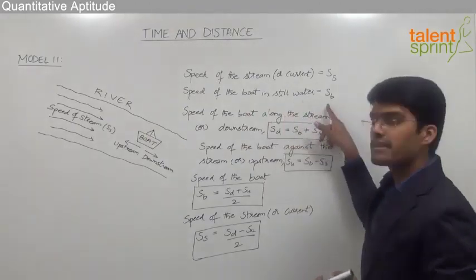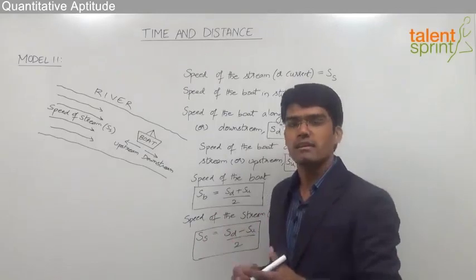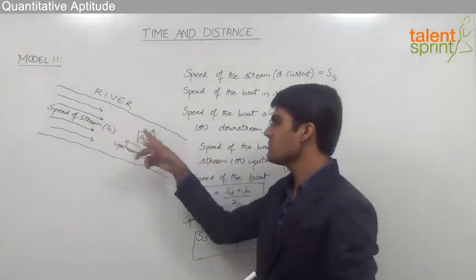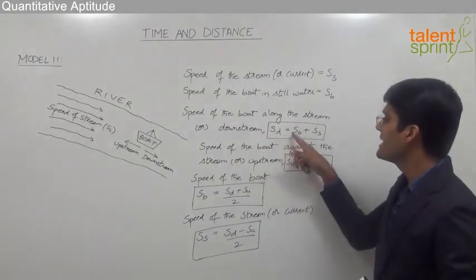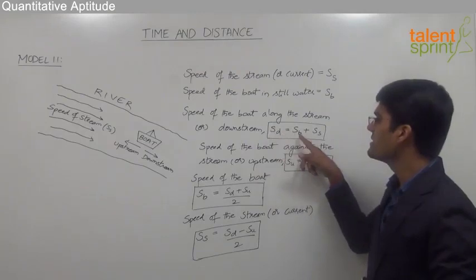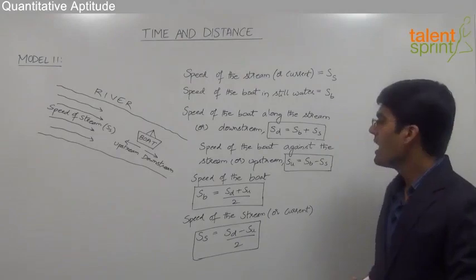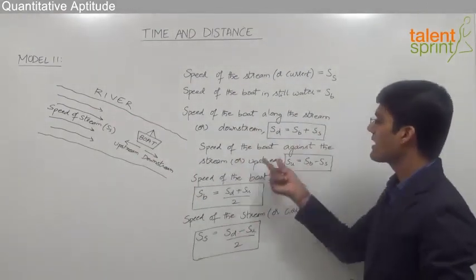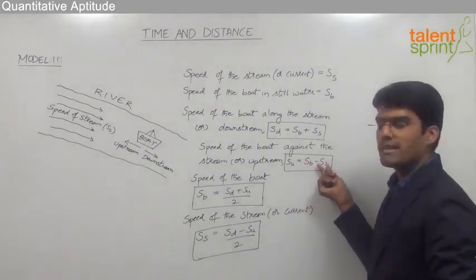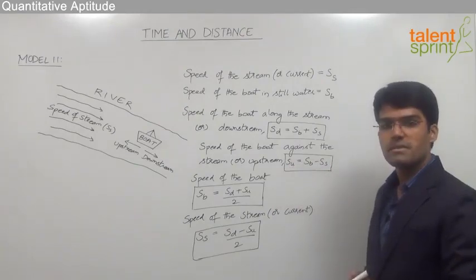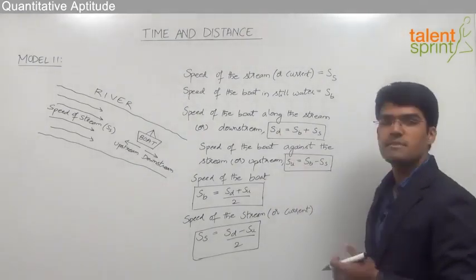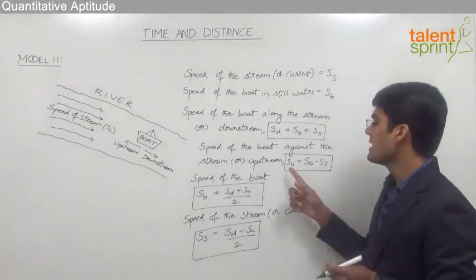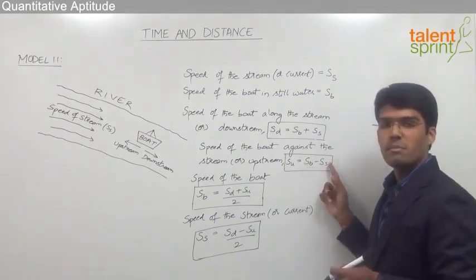The speed of the boat in still water is sb — meaning when the boat is in still water like a lake, it moves at speed sb. The speed of the boat along the stream, that is downstream, is sd = sb + ss — speed of the boat plus speed of the stream. The speed of the boat against the stream, that is upstream, is su = sb − ss — speed of the boat minus speed of the stream.